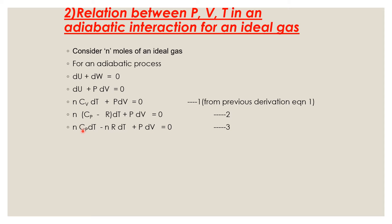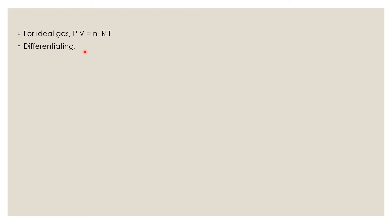Opening up the brackets, we get n·Cp·dT minus n·R·dT plus p·dV is equal to zero — equation 3. For an ideal gas, pV is equal to nRT. Differentiating, we get p·dV plus V·dp is equal to n·R·dT. Rearranging, taking V·dp to the other side gives p·dV minus n·R·dT equal to minus V·dp — this is equation 4.